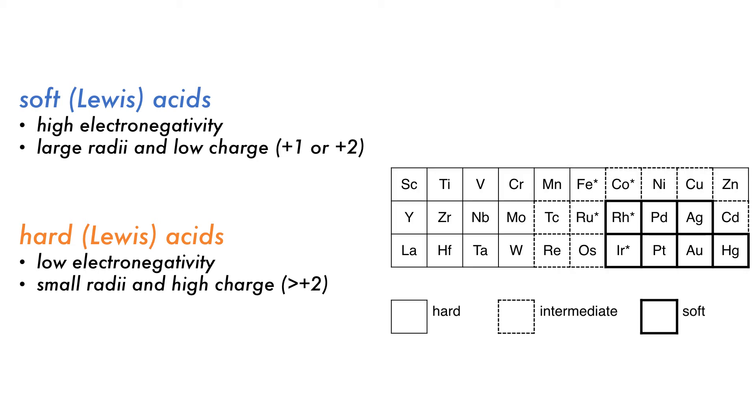Due to the trends in size and electronegativity in the periodic table, the hard, soft, acid-base classes lie in distinct regions of the table. This helps us to remember them. But remember, the oxidation state of metals can change hardness.